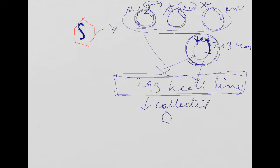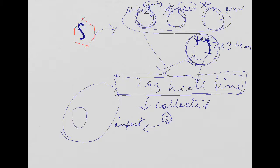After multiplication inside the 293K cell line, the viral particles are collected and allowed to infect our target cell which contains the defective gene. When the virus particle infects the cell, our gene of interest integrates inside the host genome, and normal proteins are then produced after integration of the corrected gene.